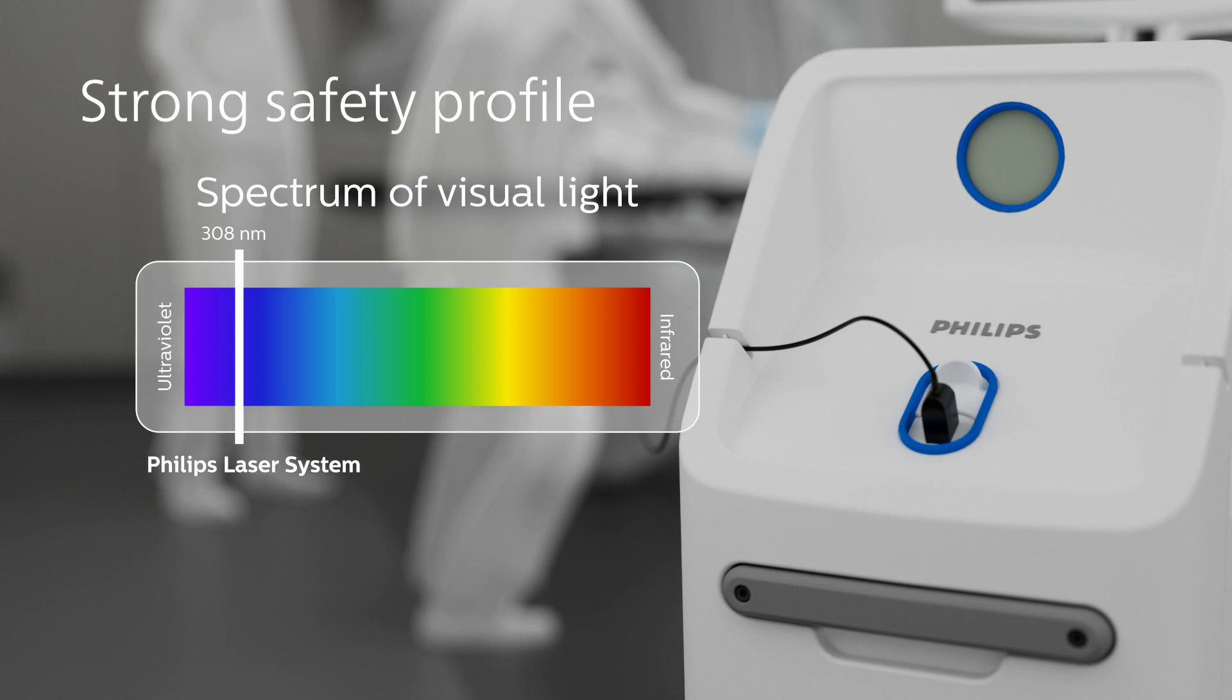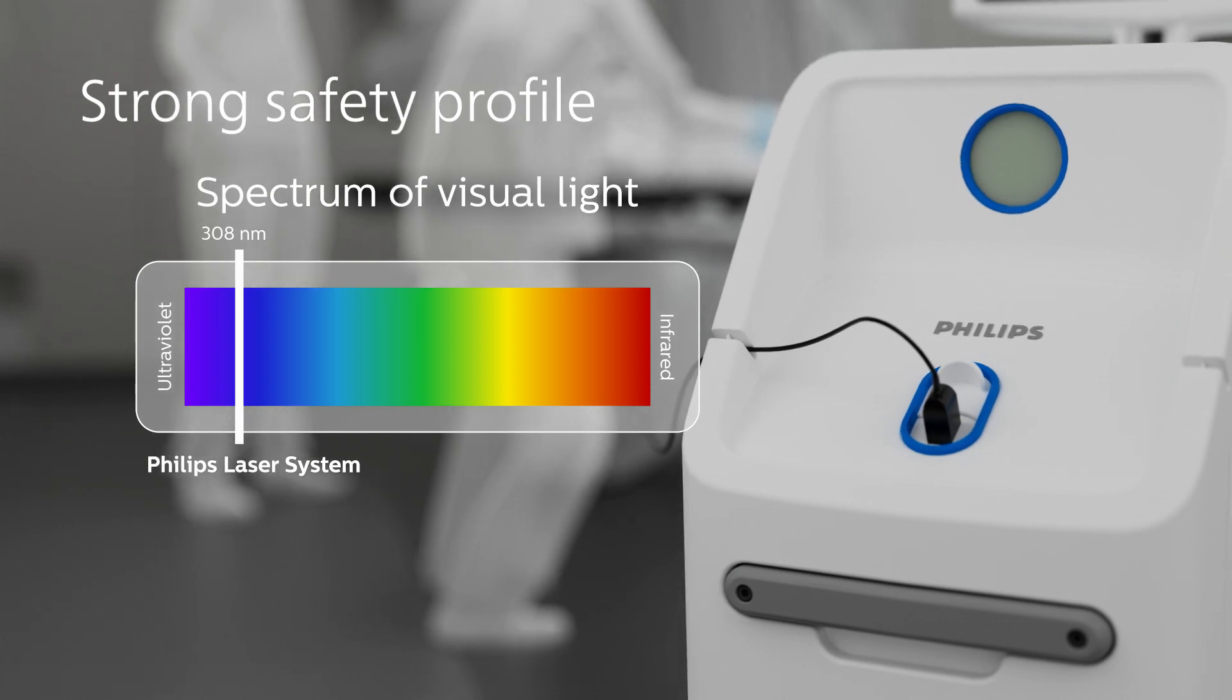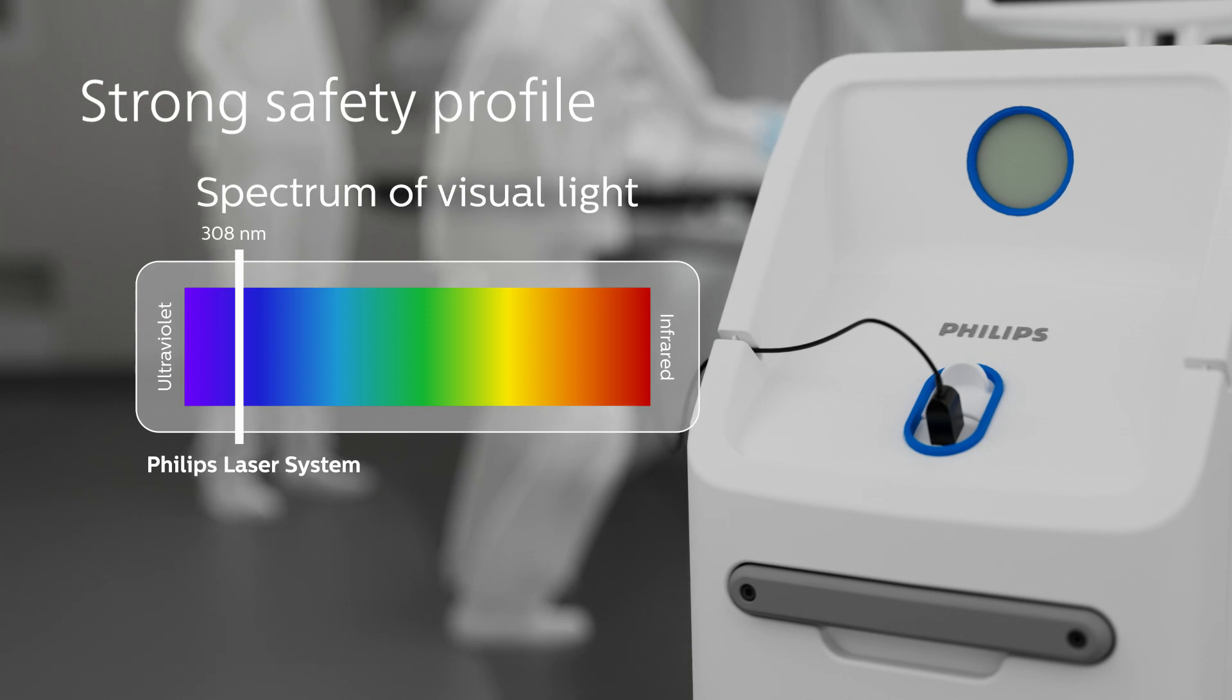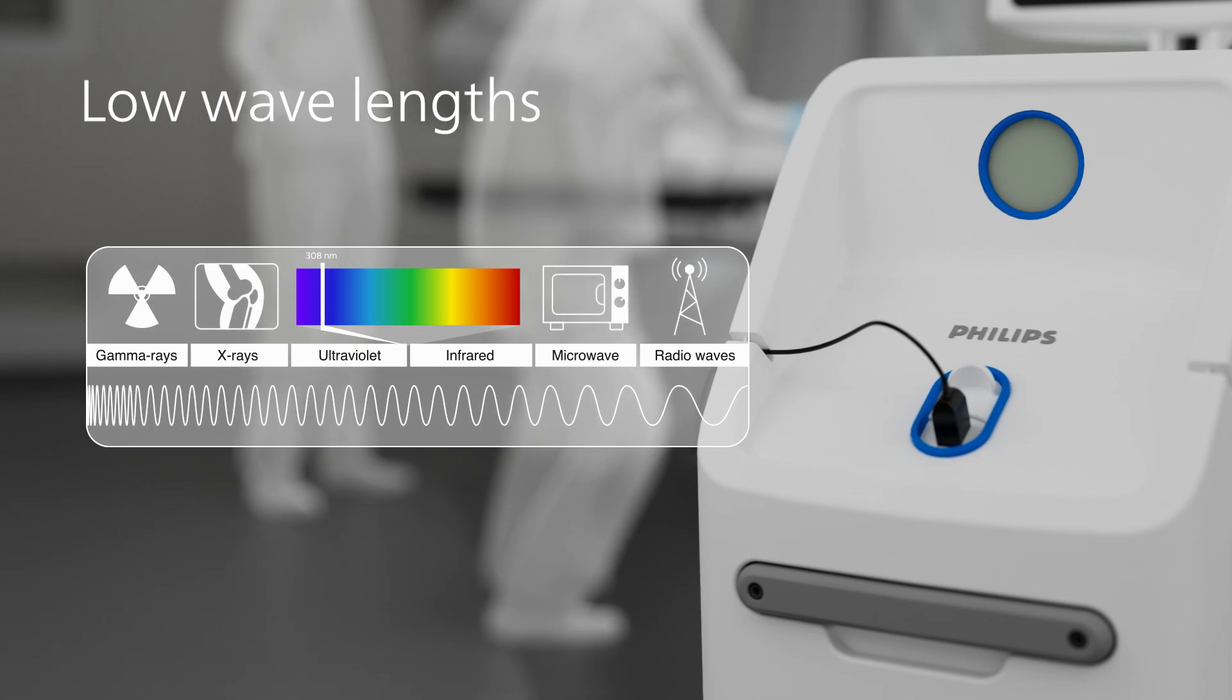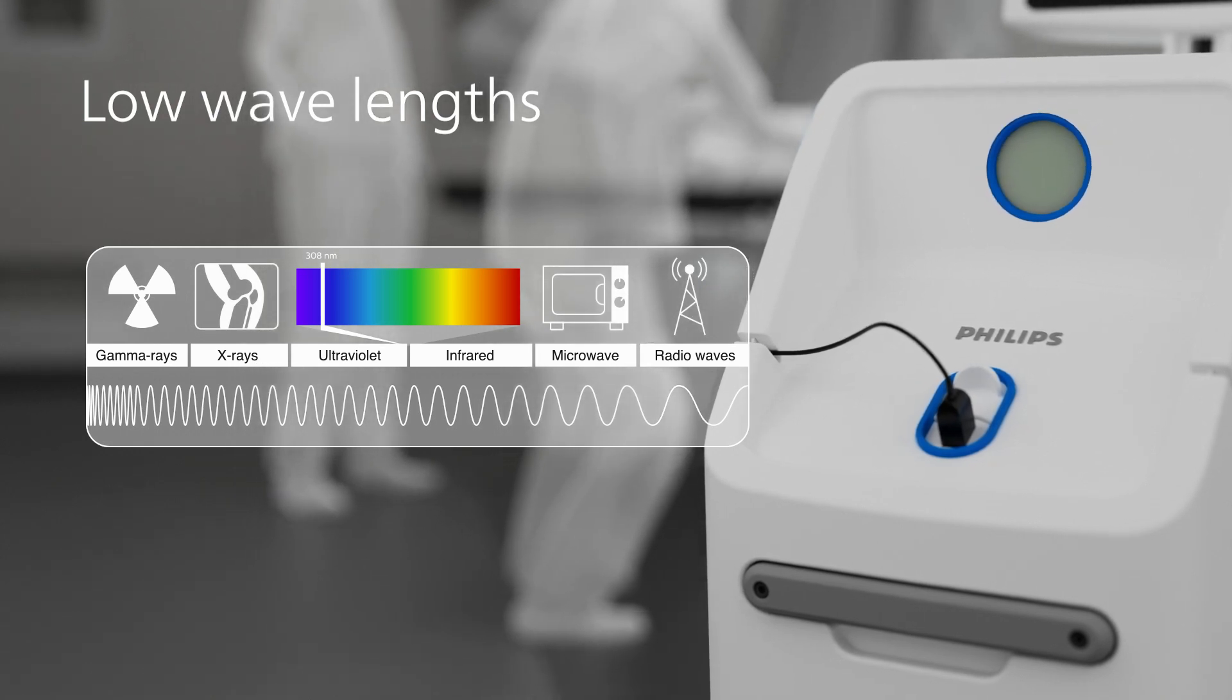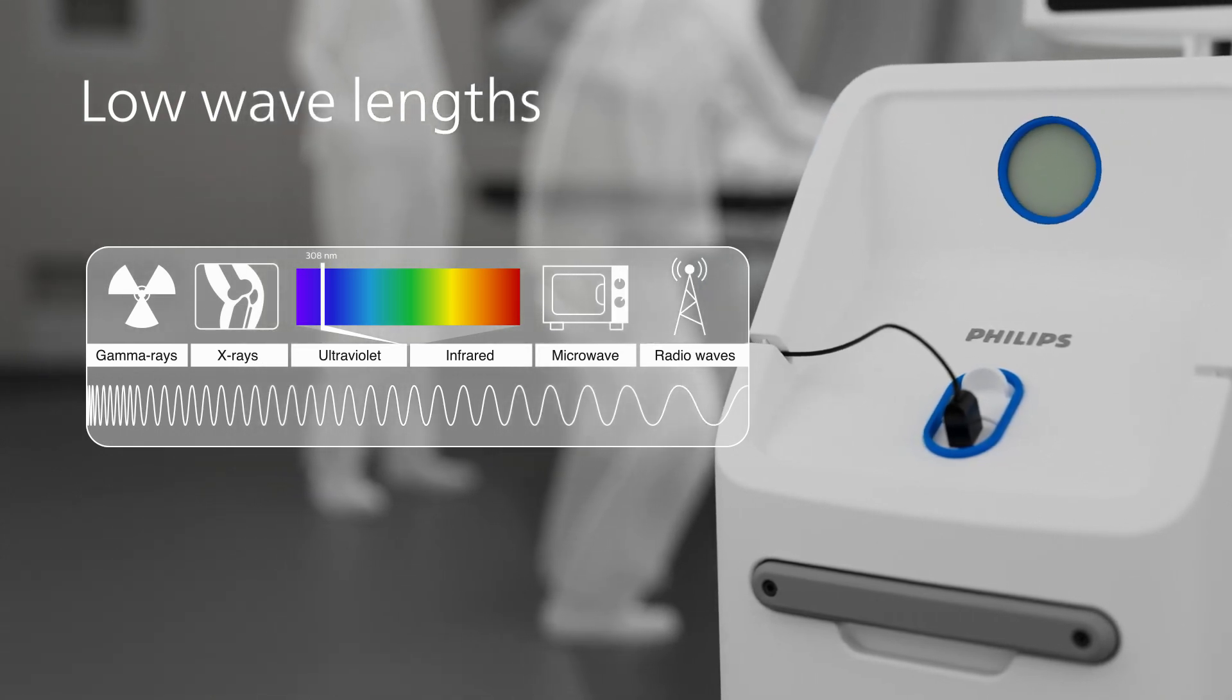The Philips Laser System generates cool ultraviolet light, which safely ablates material, as opposed to the burning or cauterization of a hot infrared laser. This pulsated laser with low penetration depth allows for precise, powerful, and safe lesion treatment.